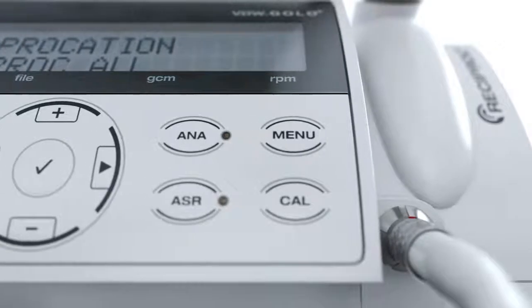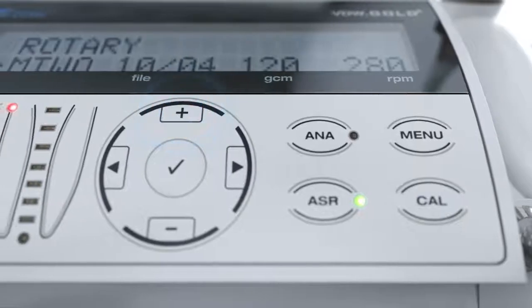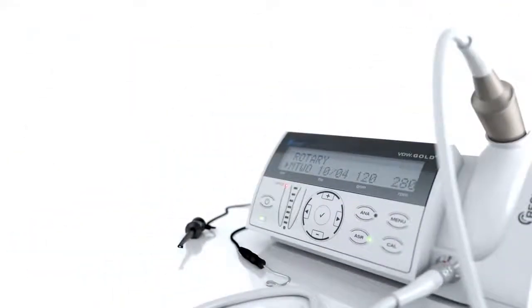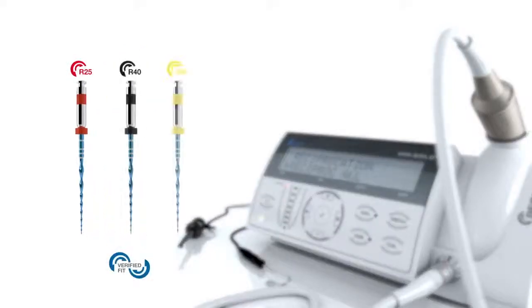You can pre-select a file system with the help of the navigation pad. The VDW Gold Reciproc incorporates the reciprocating file system Reciproc and Reciproc Blue from VDW, as well as all major rotary nickel titanium file systems.